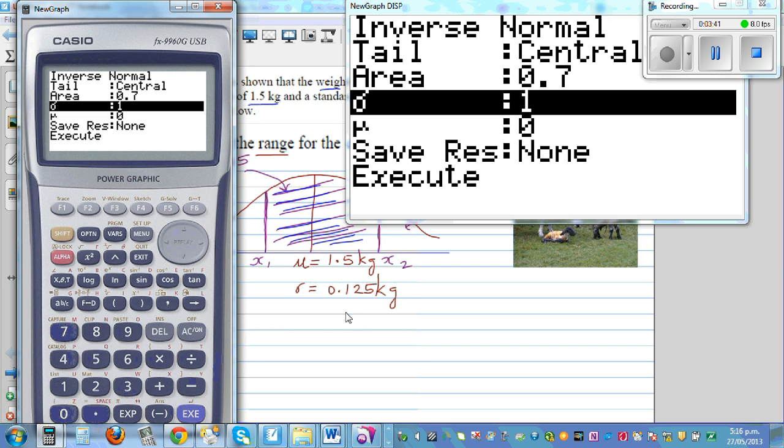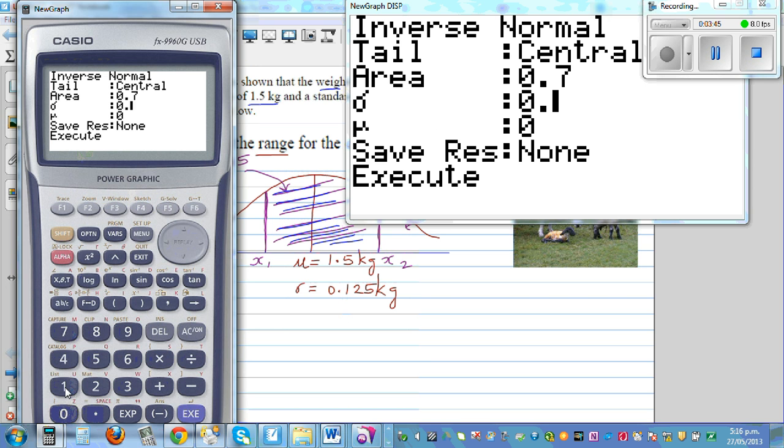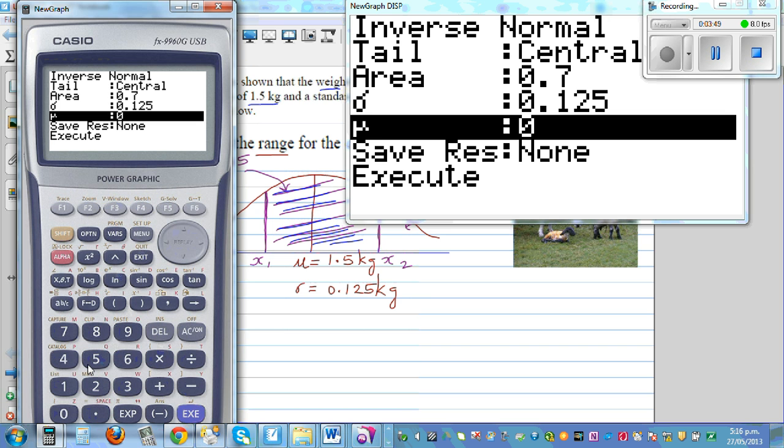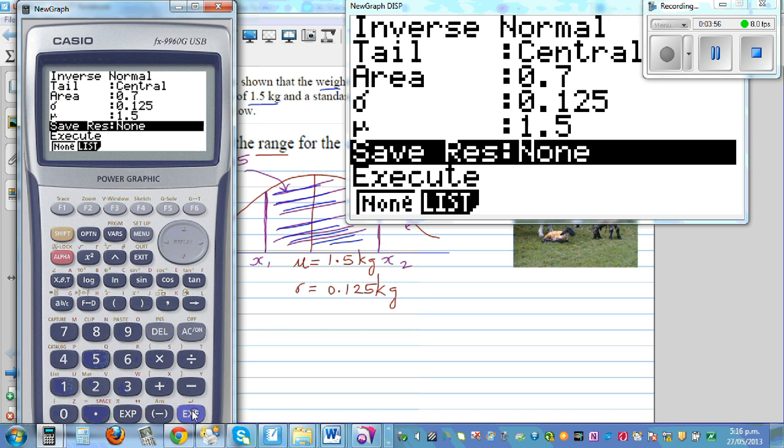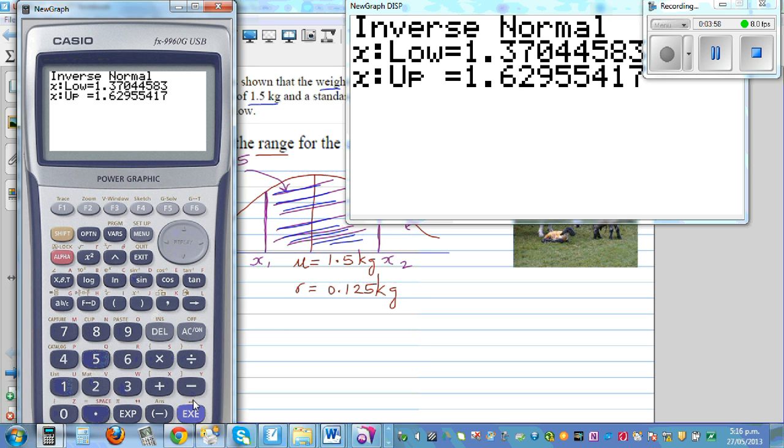Standard deviation is 0.125. And the mu, which is the mean, is 1.5. Just like that. And the calculator will compute. This is your x low and this is x up.